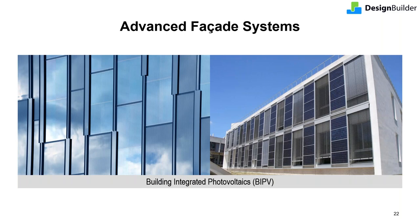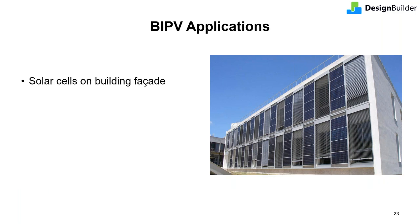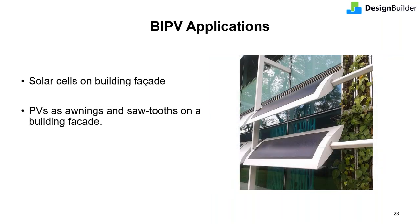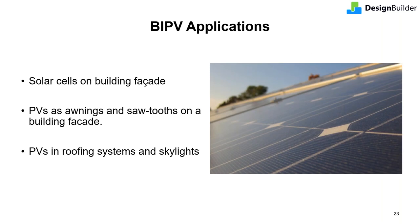Moving on to BIPVs — a building-integrated photovoltaic system consists of modules integrated into the building envelope such as on the roof or facades. These PV panels simultaneously serve as building envelope material and a power generator. Photovoltaics may be integrated into many different assemblies: solar cells can be incorporated onto the facade complementing or replacing traditional vision or spandrel glass, added onto awnings and sawtooth designs, or added as roof systems or onto skylights. DesignBuilder currently supports various types of renewable energy generators: PV, BIPV, wind, internal combustion engine, micro turbine, and more.